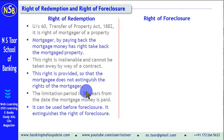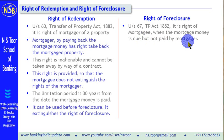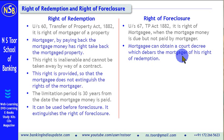Now let us see what is the Right of Foreclosure. Under Section 67 of the Transfer of Property Act, this right is the right of the mortgagee — in our example, the bank. This right is available when the mortgage money is due but not paid by the mortgagor. When the loan is due but the mortgagor is not paying, the mortgagee can obtain a court order — a court decree — and this decree will debar the mortgagor of his right of redemption. Once this decree is obtained by the mortgagee from a court, a bar will be put on the mortgagor for using his right of redemption.